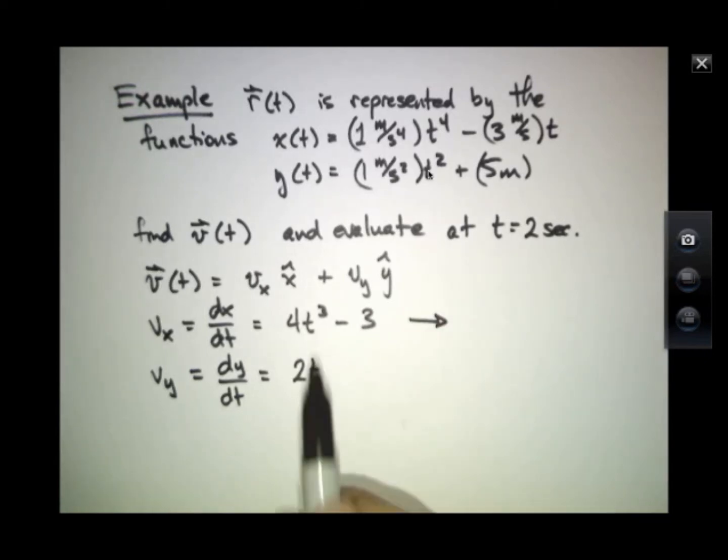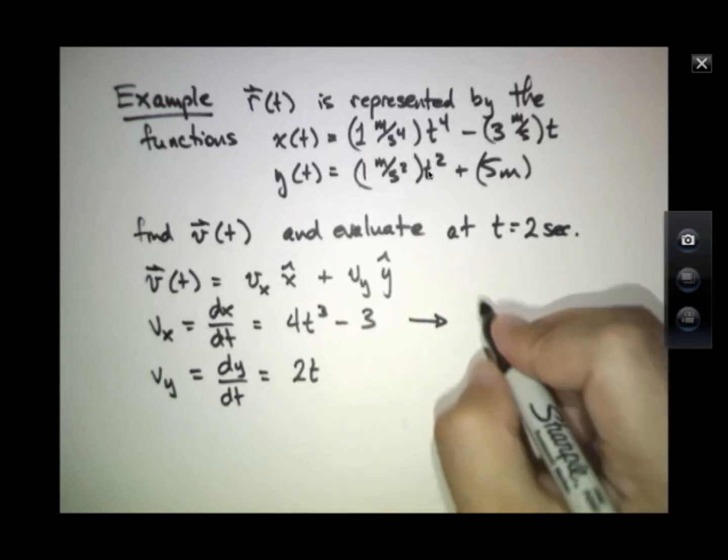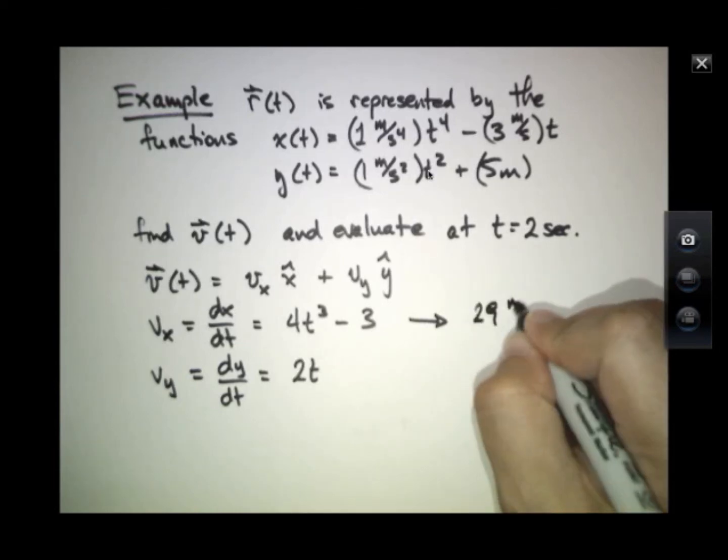At time 2 seconds, I plug in 2 here. 2 cubed is 8, and 8 times 4 is 32, minus 3 is 29. This has units of meters per second.